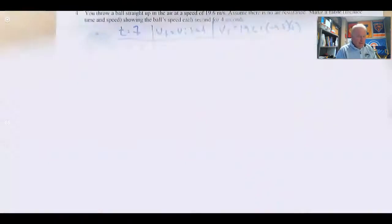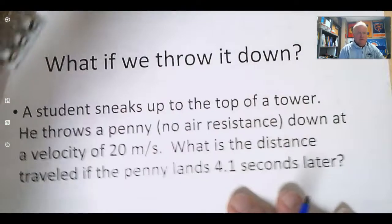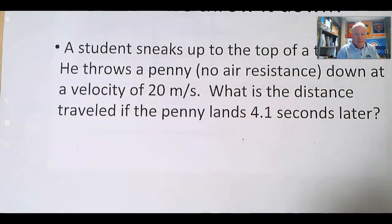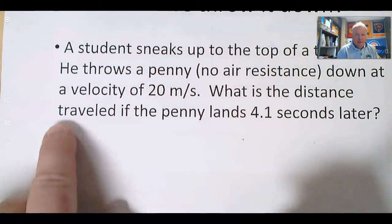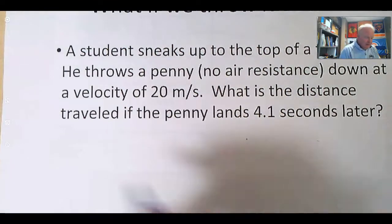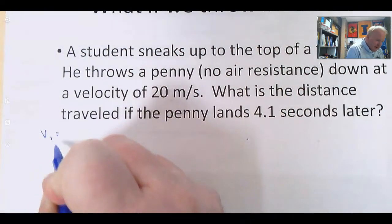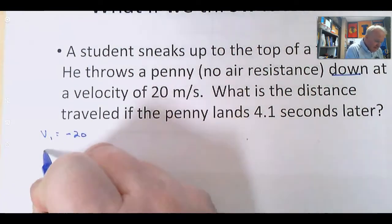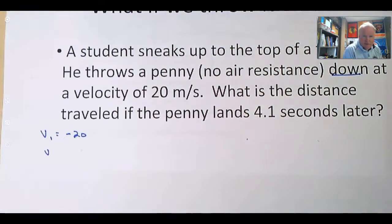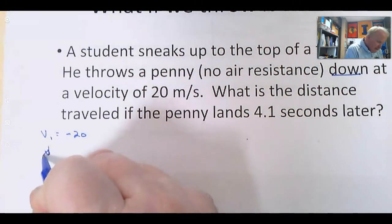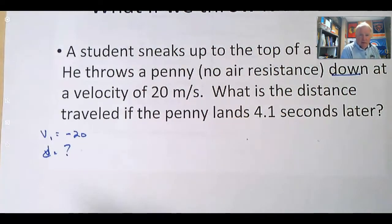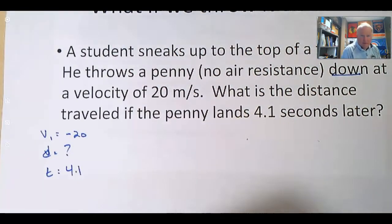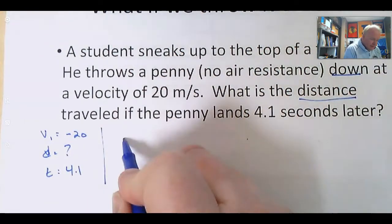Now what if we throw a ball down? If a ball is thrown down, there's nothing different. A student sneaks up to the top of a tower. He throws a penny with no air resistance down at a velocity of 20. What's the distance traveled if the penny lands 4.1 seconds later? We have a VI of 20, but it's down, so it's negative 20. VF is unnecessary. We don't need to know that for the distance. They're asking us to find the distance, and they give us a time of 4.1 seconds.